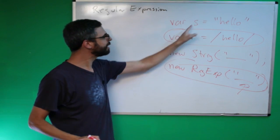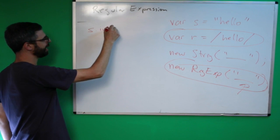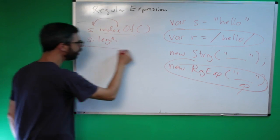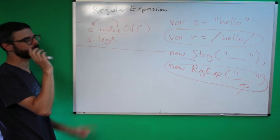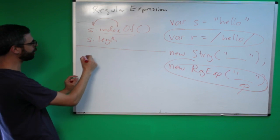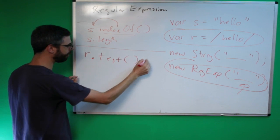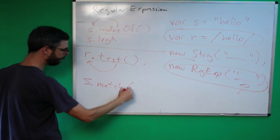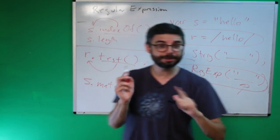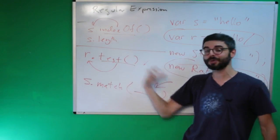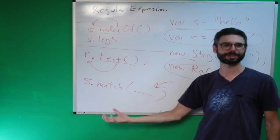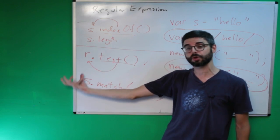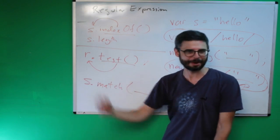Once you have a regular expression, in the same way that a string object has functions like s.indexOf() or properties like s.length, a regular expression has those things as well. I'm going to show you r.test(), and I'm also going to show you a function you call on a string — s.match() — but you pass in a regular expression. In JavaScript, there are times when you say the regular expression dot the function with a string, and sometimes you say the string dot a function with a regular expression. Match, split, and replace are all functions you call on a string that expect a regular expression as an argument.